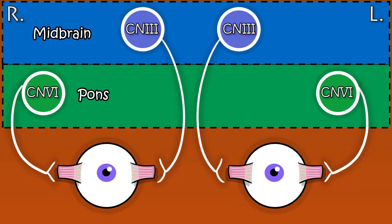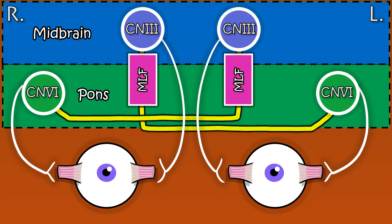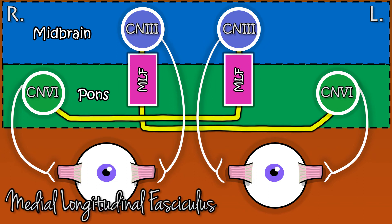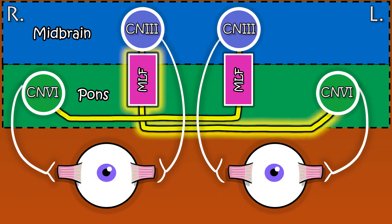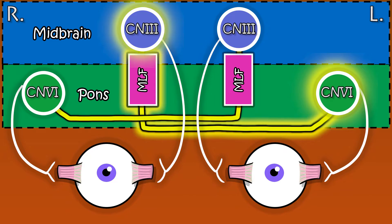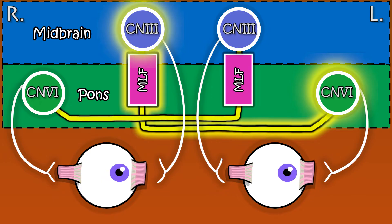To understand INO, you need to understand what goes wrong — how these two nuclei talk to each other. There's a heavily myelinated tract called the medial longitudinal fasciculus that joins them up. On left lateral gaze, the right medial longitudinal fasciculus allows the left abducens nerve and right oculomotor nerve to collaborate and move the eyes in a synchronised fashion.